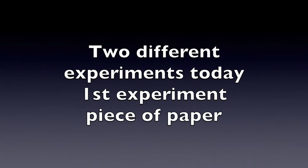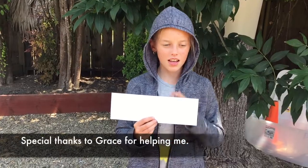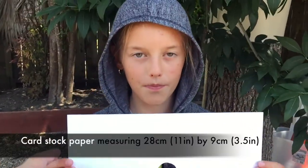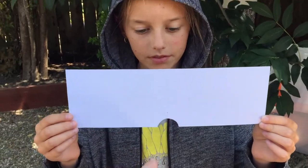We have two different experiments today. The first one is going to be with a piece of paper. Welcome back to Kids Fun Science. My name is Grace and we are going to be seeing how animals see. So we are going to take this piece of paper and we will have the dimensions on there. It is 11 inches by 3.5 inches and we cut out a little spot right here for your nose.